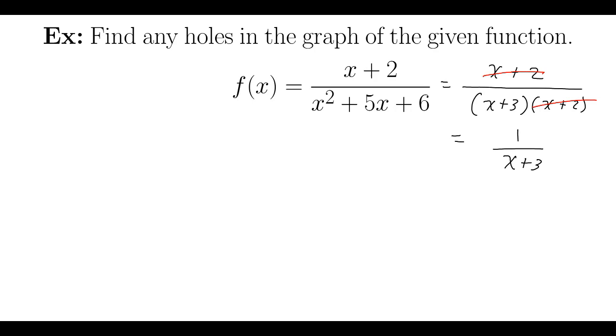So off to the side here, x plus 2 is what canceled, so I'll set that equal to 0. I'll solve that to get x equals negative 2. That is the x-value of the hole in the graph.